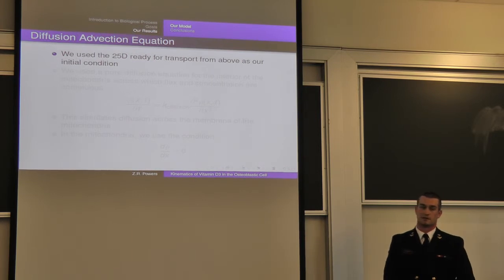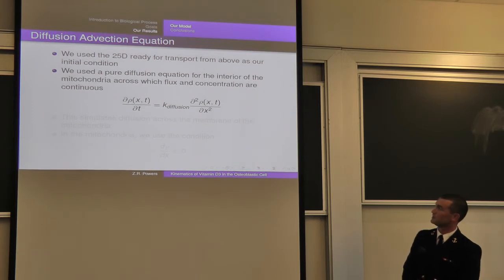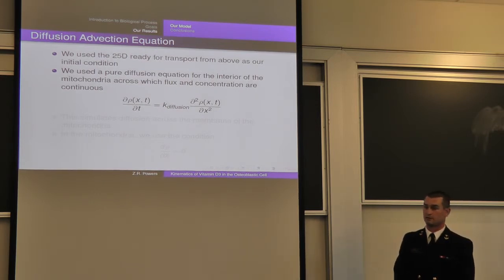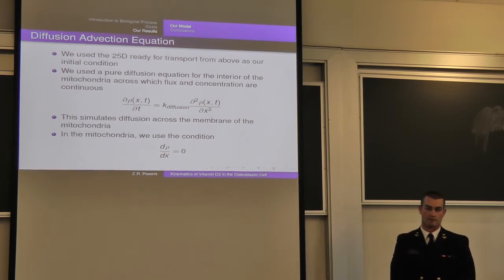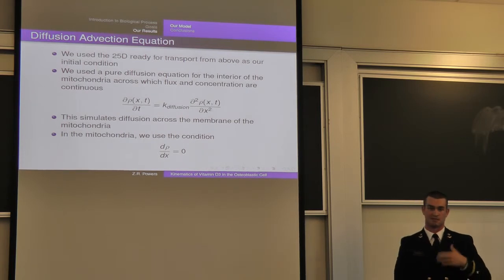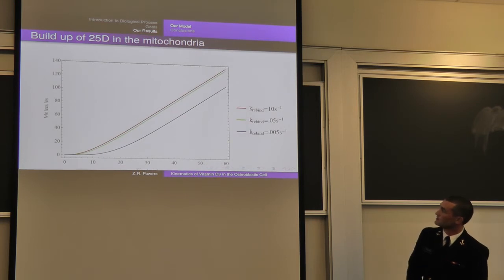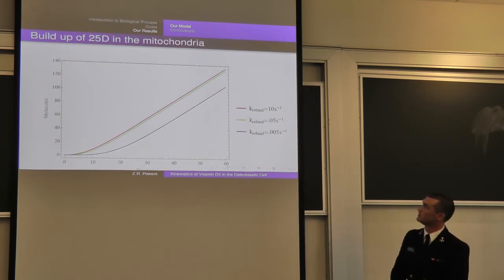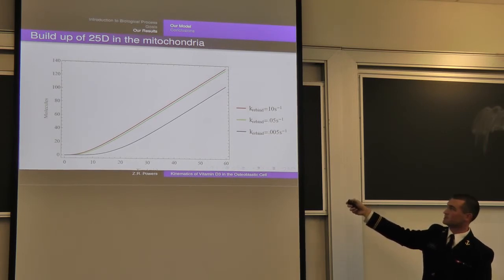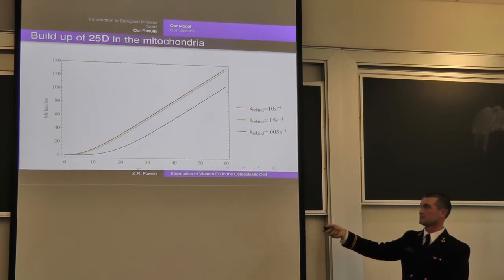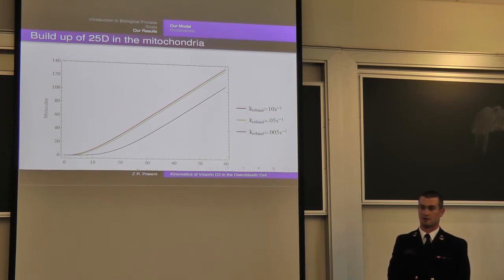We used the kinetic model to come up with our initial conditions, and then to cross the membrane of the mitochondria, we used a pure diffusion equation, saying that flux and concentration were continuous across the mitochondrial membrane. This is the movement along the cytoskeletal tract — at the center of the cell, after entering the mitochondria. You can tell from this graph that there is relatively little effect between dropping K-rebind from 10 per second to 0.05 per second, but a further decrease of an order of magnitude greatly delays the rate at which the motor proteins pull the DBP along the cytoskeletal tract, which was of interest to us.